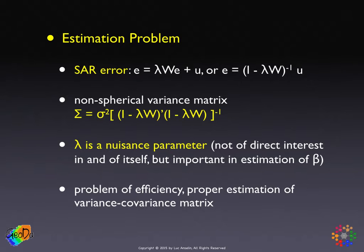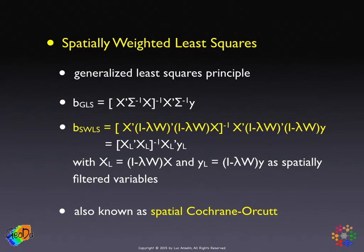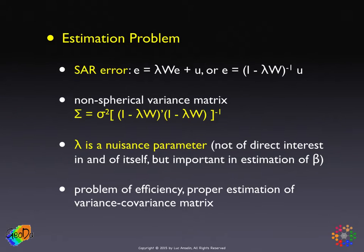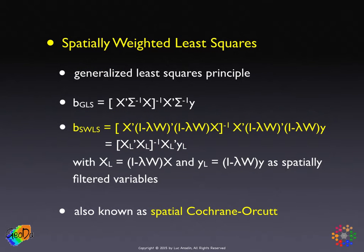Getting the variance-covariance matrix right is the core problem of estimating the spatial error model. After that, it's a standard application of feasible generalized least squares — in the spatial case called spatially weighted least squares. We can see why: the GLS expression is x prime sigma-inverse x, inverted, times x prime sigma-inverse y. For our case, sigma has an inverse of the cross product, so taking the inverse of that inverse leaves us back with the original cross product, which simplifies matters greatly.